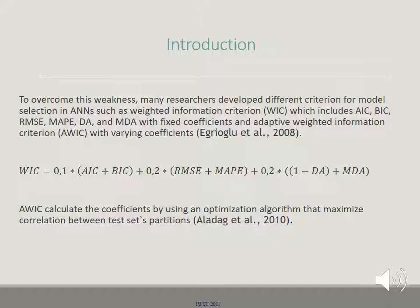To overcome this weakness, many researchers developed different criteria for model selection in artificial neural networks, such as weighted information criteria — which includes Akaike and Schwarz information criteria — root mean squared error, mean absolute percentage error, direction accuracy, and modified direction accuracy with fixed coefficients. An adaptive weighted information criteria with varying coefficients was proposed by Areola et al. in 2008. The adaptive weighted information criteria calculates coefficients using an optimization algorithm that maximizes correlation between test set partitions, by Alada et al. in 2010.